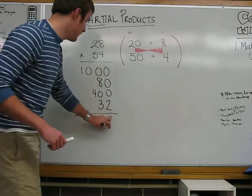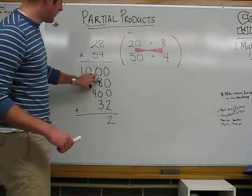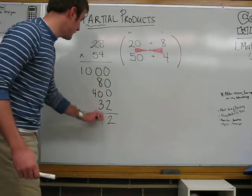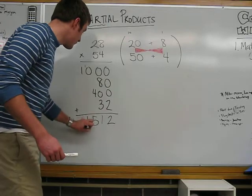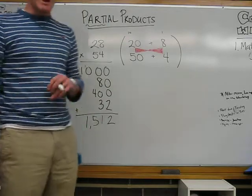0, 0, 0, and 2 is 2. 0 plus 8 plus 0 plus 3 is 11. 1 plus 0 plus 4 is 5. Our 1 comes straight down, and we have 1,512.